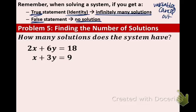Now let's take a look at example 5 below. And we need to figure out how many solutions there are with this system. We have 2x plus 6y equals 18 and x plus 3y equals 9. Let's multiply the second equation by negative 2 in order to get rid of the variable x.